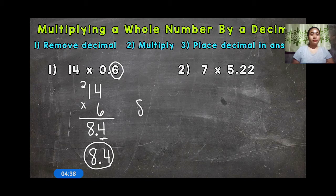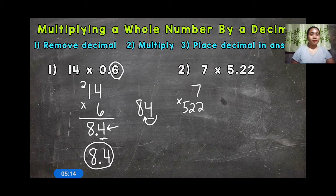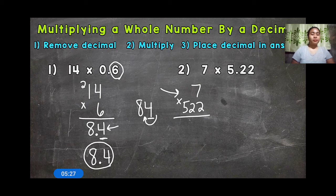Another way of thinking about it: we had 84 as our answer, and for every whole number the decimal is at the end, so we bring our decimal in once to give 1 digit behind the decimal. On to number 2, where we have 7 times 5 and 22 hundredths. First step: remove any decimals and rewrite the problem, so we get 7 times 522. When it comes to multiplication, we want the number with more digits on top, so we can do 522 times 7 — that's because multiplication is commutative. You'll get the same answer either way.